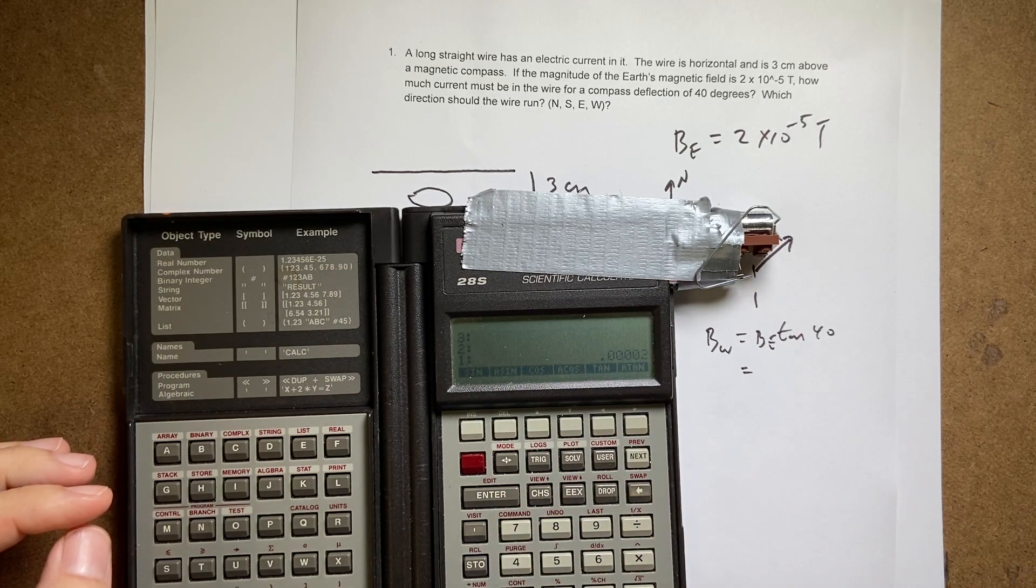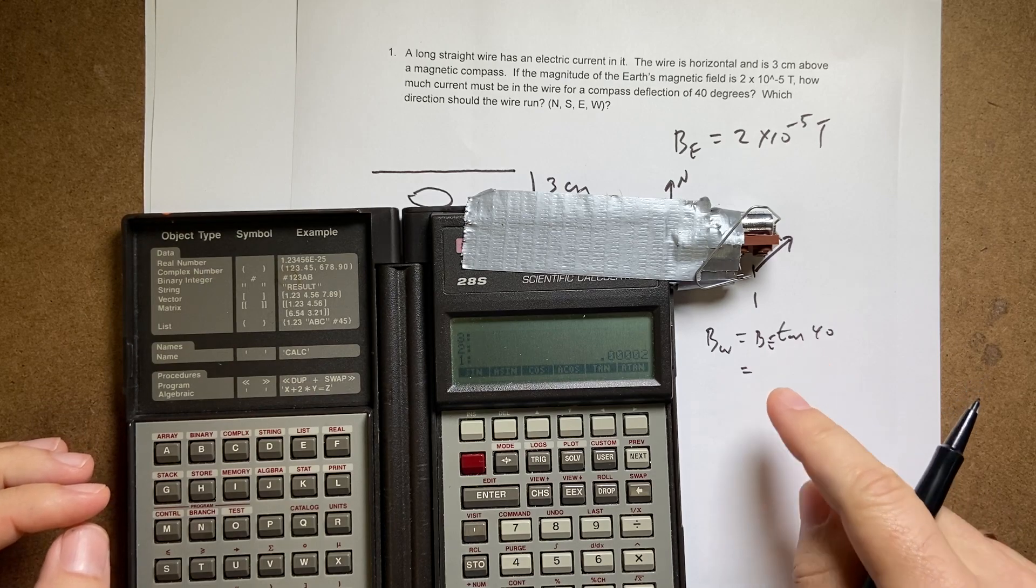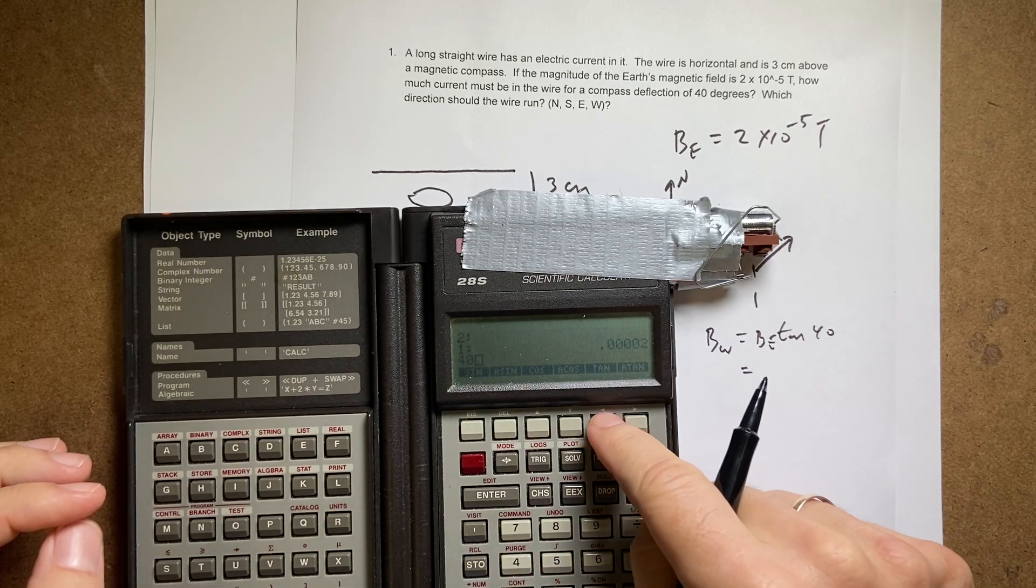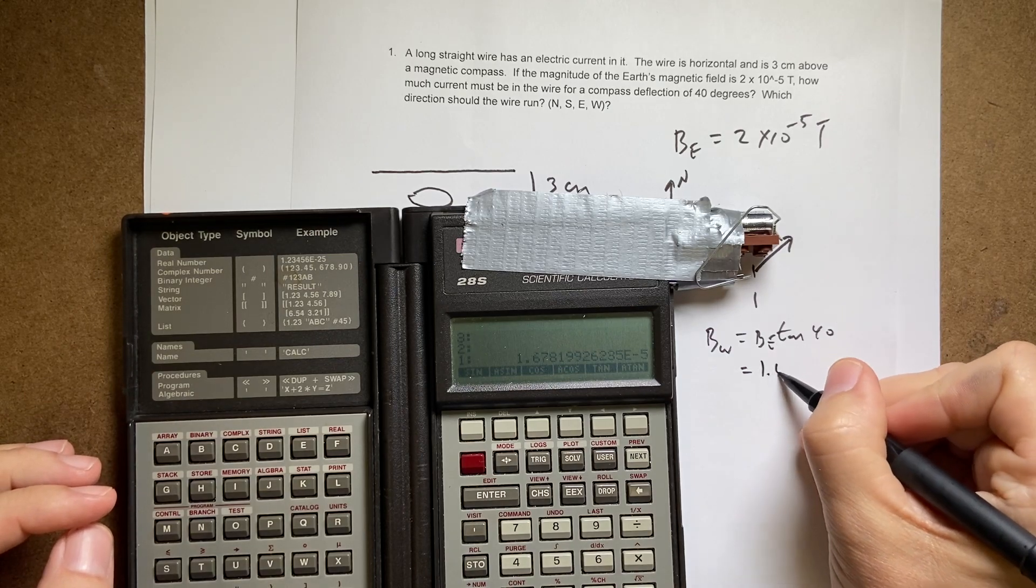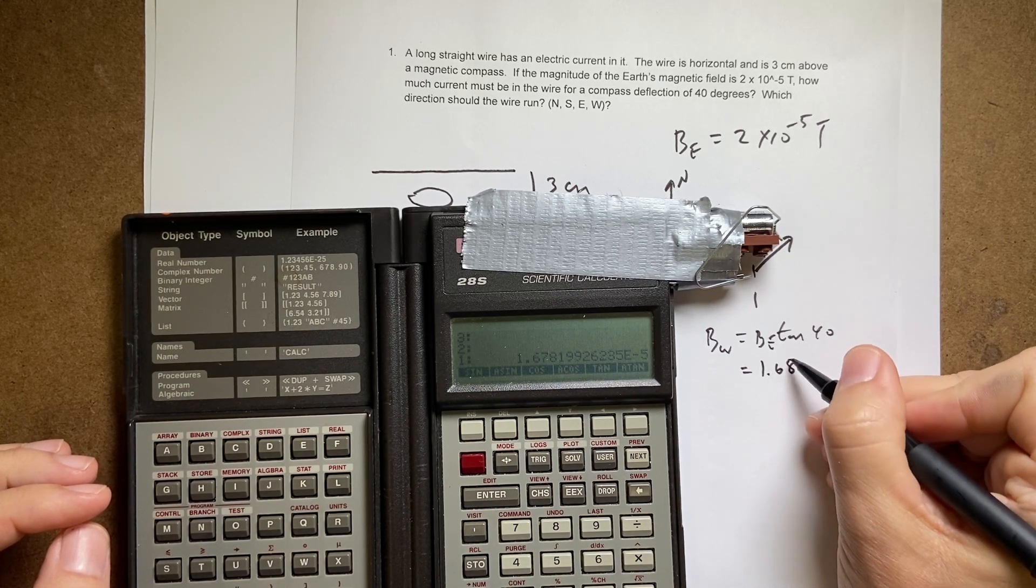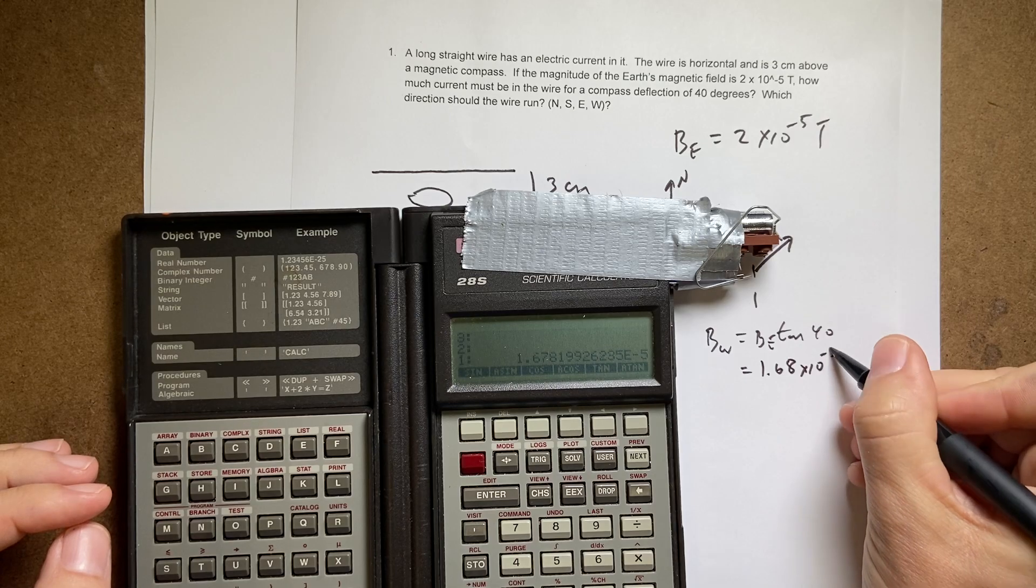Enter. And then I'm going to take the tangent of 40. So 40 tangent. And multiply those two together. And I get 1.68 times 10 to the negative 5th Tesla.